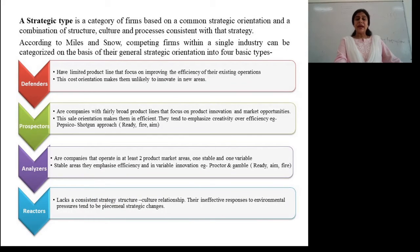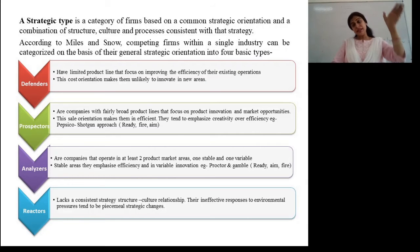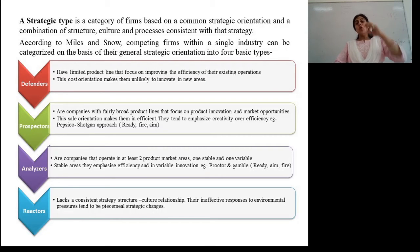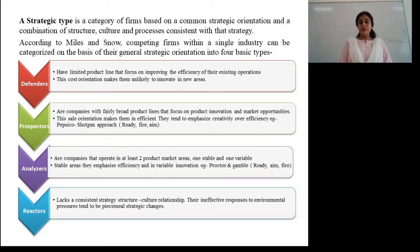The strategic type is a category of firms based on common strategic orientation and a combination of strategic culture and processes consistent with that strategy. According to Miles and Snow, competing firms within a single industry can be categorized into four types. The first being defenders, the second being prospectors, the third being analyzers, and the fourth being reactors.